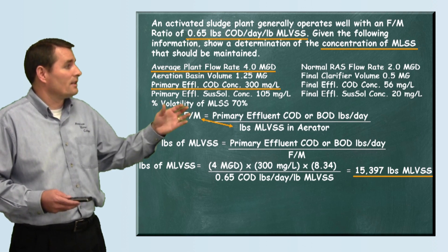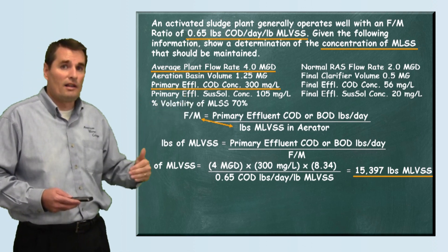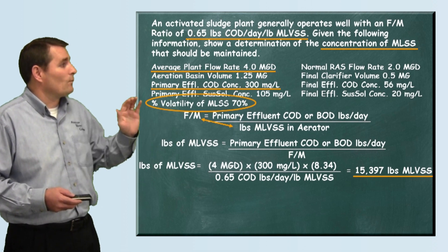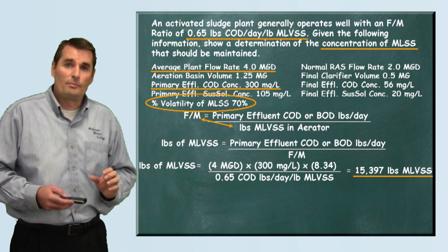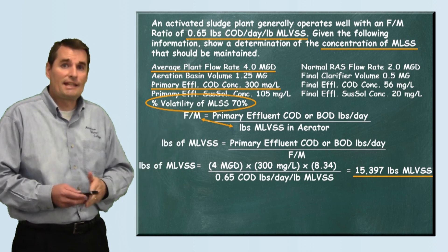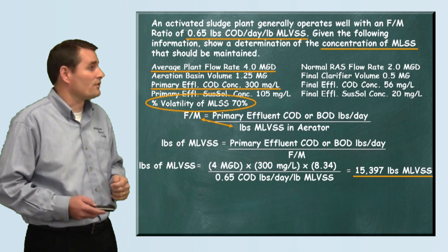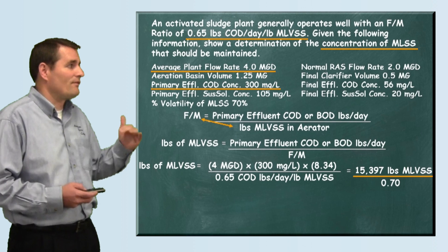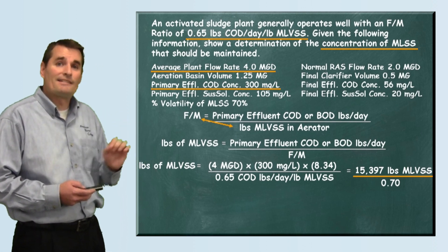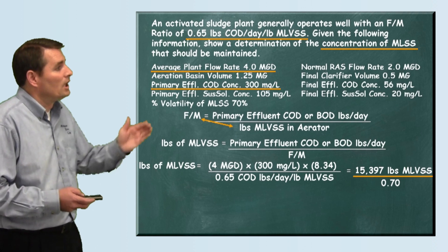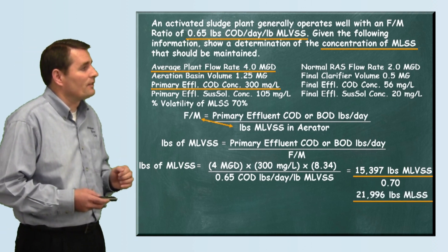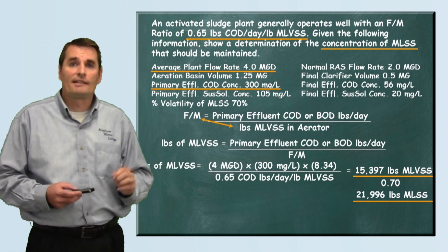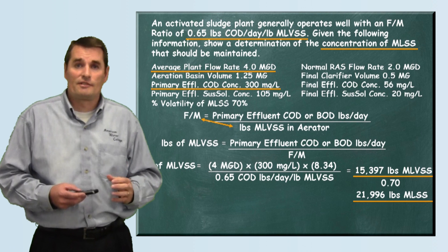In order to get the total mixed liquor suspended solids, we use the 70% volatility relationship. We divide our pounds of volatile suspended solids by the percent that's volatile to get the total MLSS. So we take the 15,397 and divide it by 0.70, which gives us 21,996 pounds of mixed liquor suspended solids.